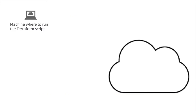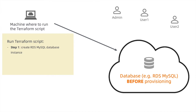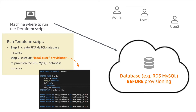This demo will show you how to pull up an RDS MySQL database and provision it automatically in a single Terraform script. You just need a machine with internet connection. When running the Terraform script, the first step will create an RDS MySQL database instance, which is initially set up without provisioning. Then the second step will execute the Local ESC Provisioner to do the provisioning action, such as create table and grant privileges to the database accounts.